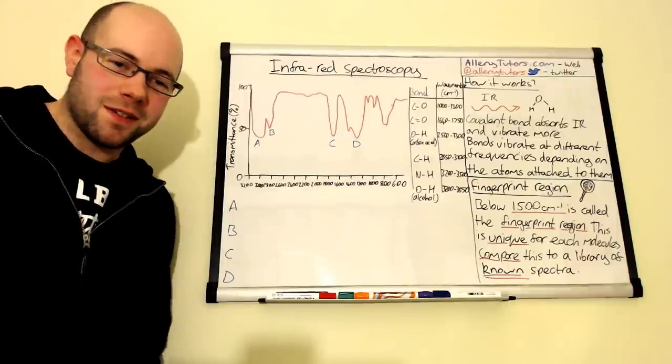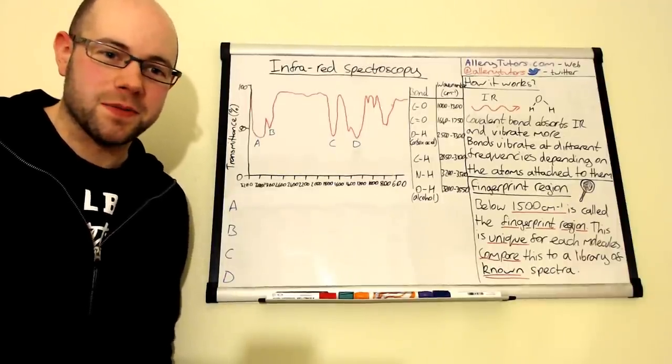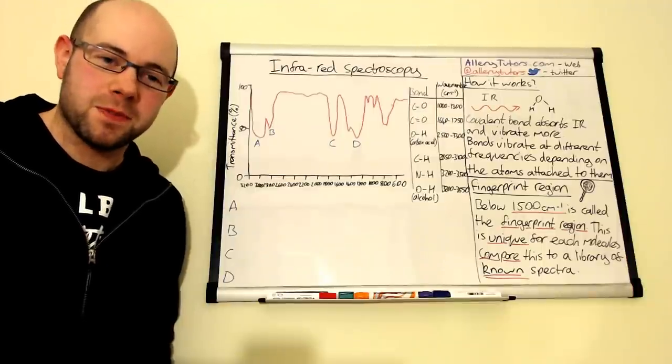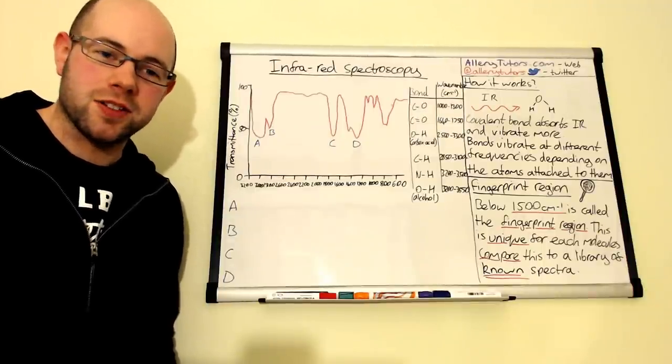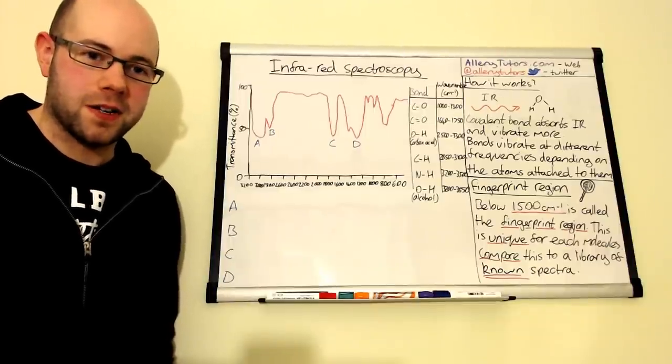Hi everybody, my name is Chris Horace and I'm from anatomytutors.com and in this video we're going to be looking at infrared spectroscopy. Infrared spectroscopy is an analytical technique that, as the title suggests, uses infrared radiation to help identify compounds.